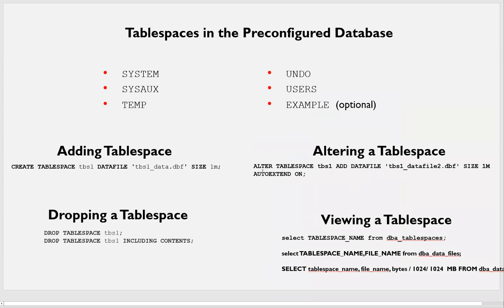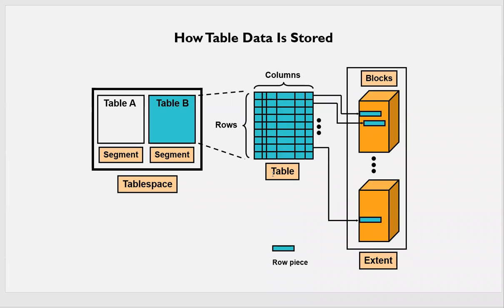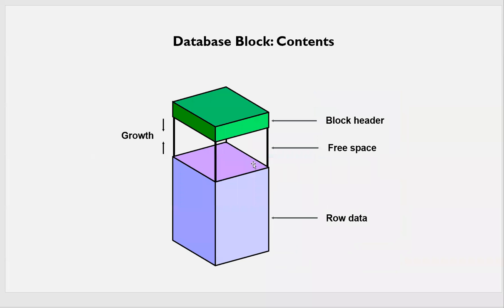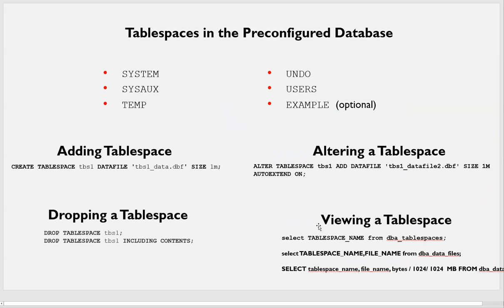Now that we understand extents, blocks, tables, and segments, we will actually deal with tablespaces. System and SYSAUX data files are mandatory. TEMP is for temporary purposes like sorting and ascending/descending. UNDO is for holding old images and for recovery scenarios. EXAMPLE is optional and default dummy schemas are available there. The USER schema is the default for all new users, or you can have any tablespace of your own. These are the typical default tablespaces in any new database.